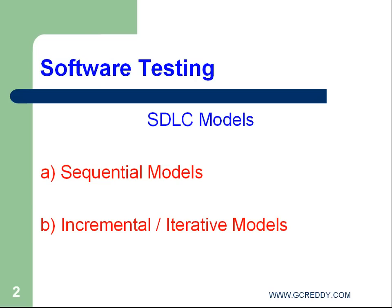Examples for sequential models: waterfall model, V-model, etc. Examples for incremental or iterative models: Agile model, spiral model, etc. Incremental models are expensive, but the success rate is very high.